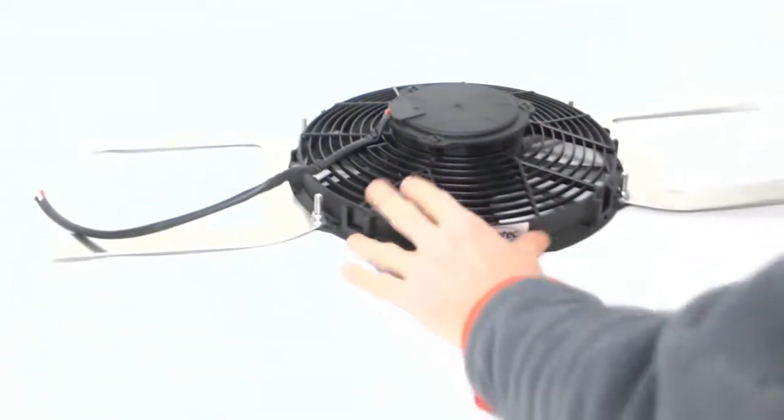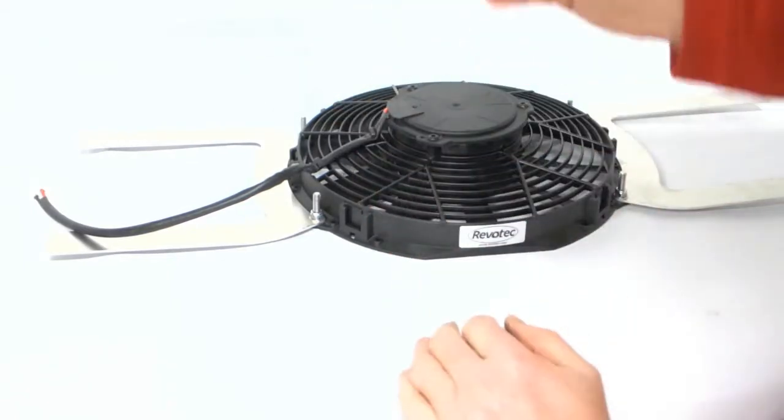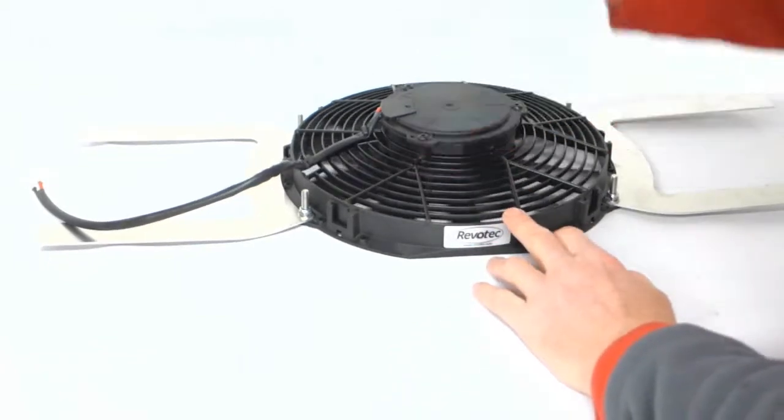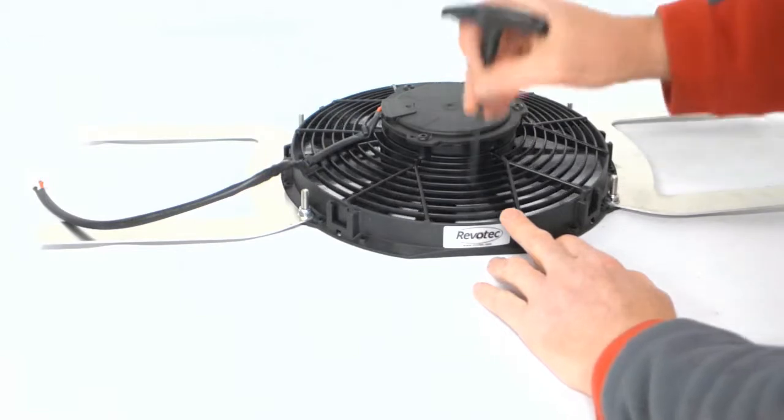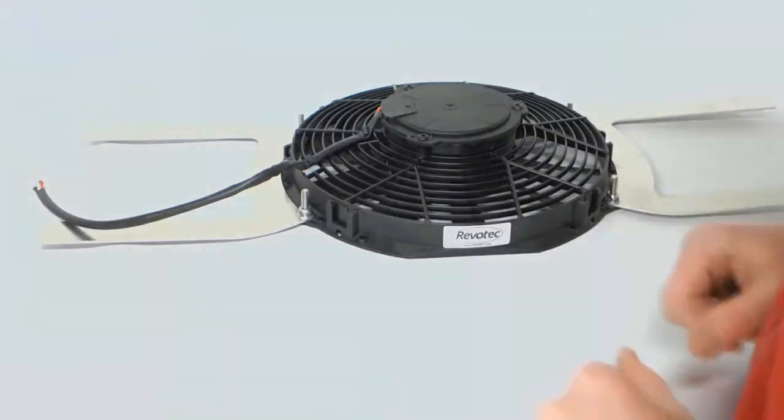That's all you need to do. So they sit incredibly close to the radiator core. If you need to, you can check that the blades of the fan don't snag before you make your electrical connections and power the fan up.